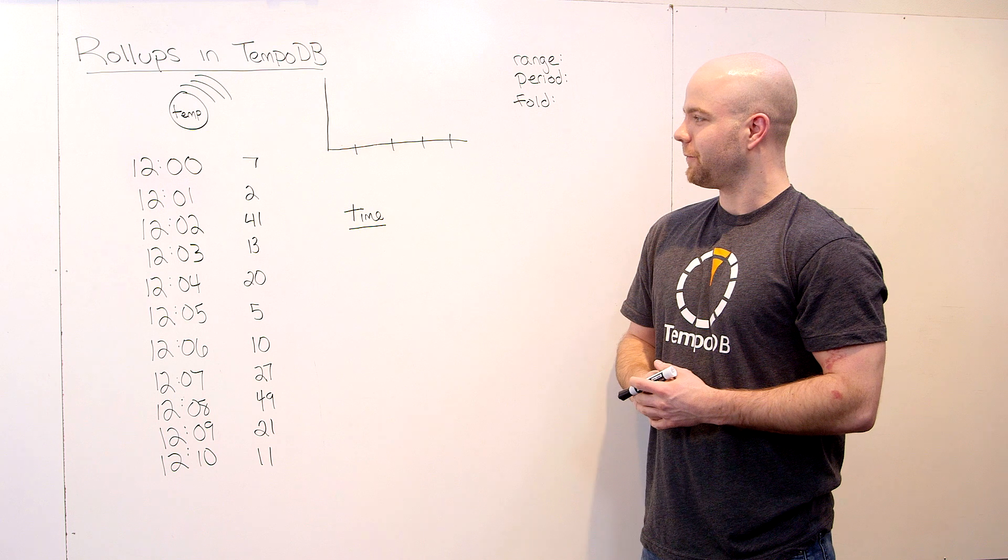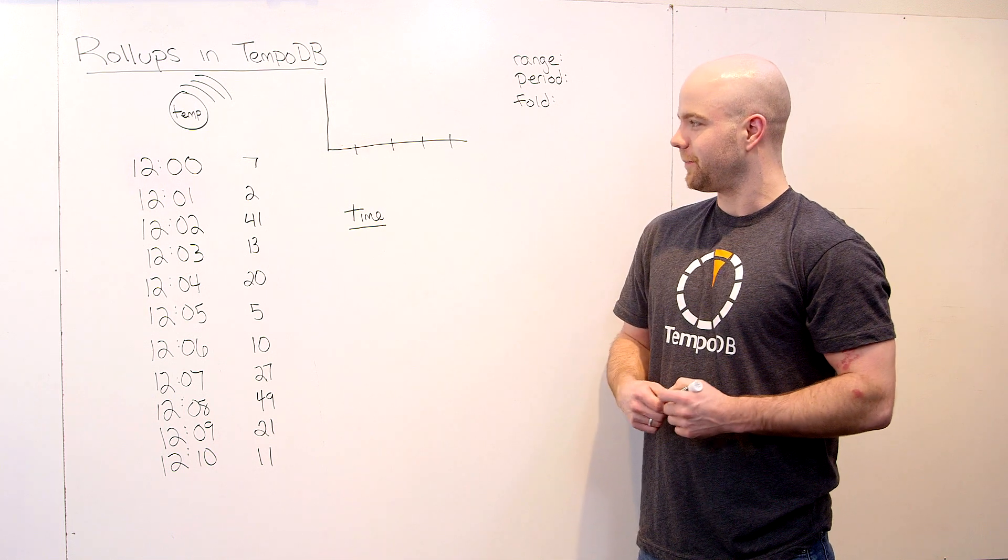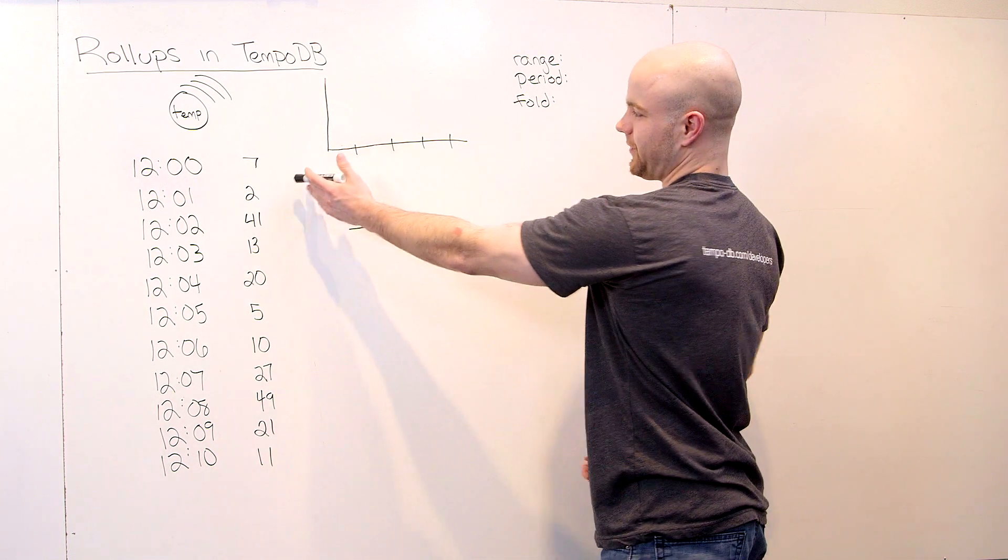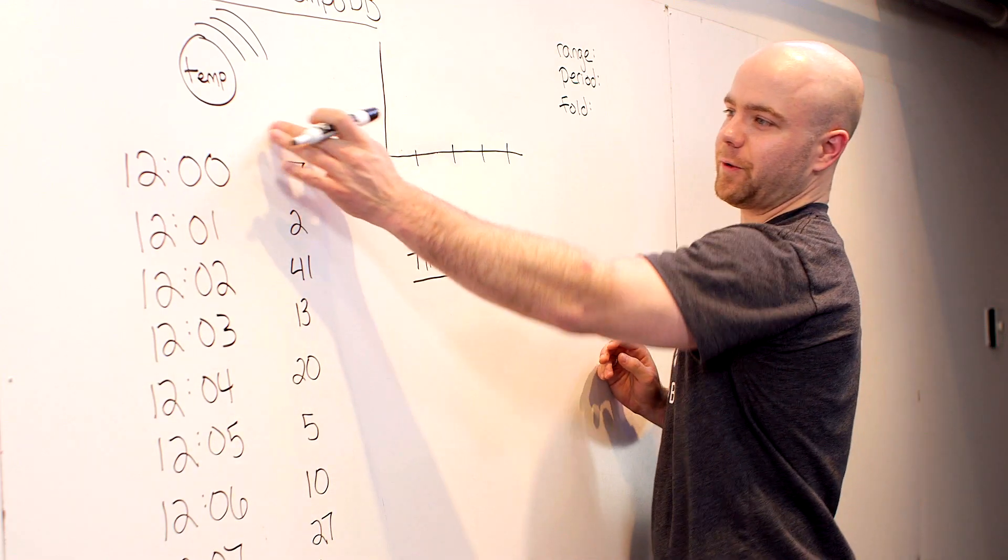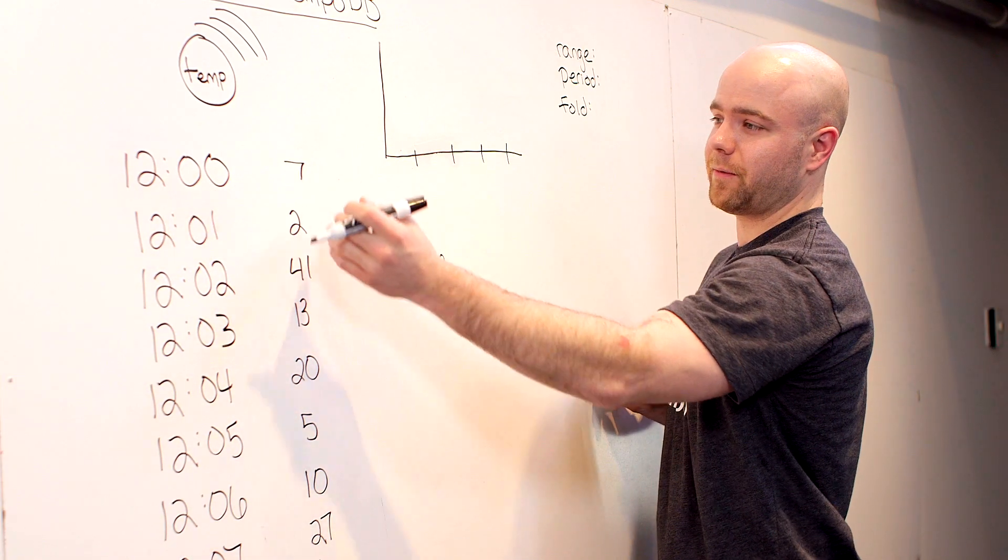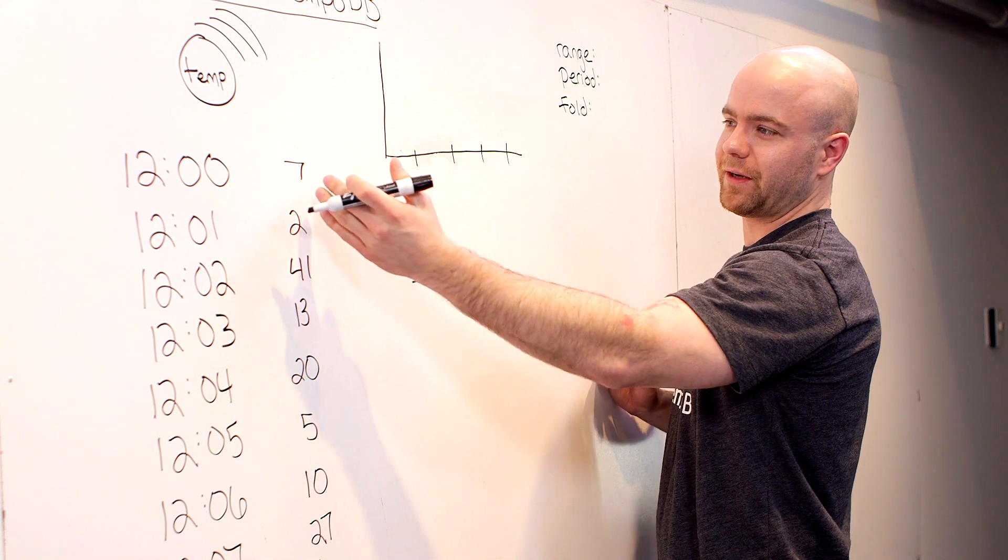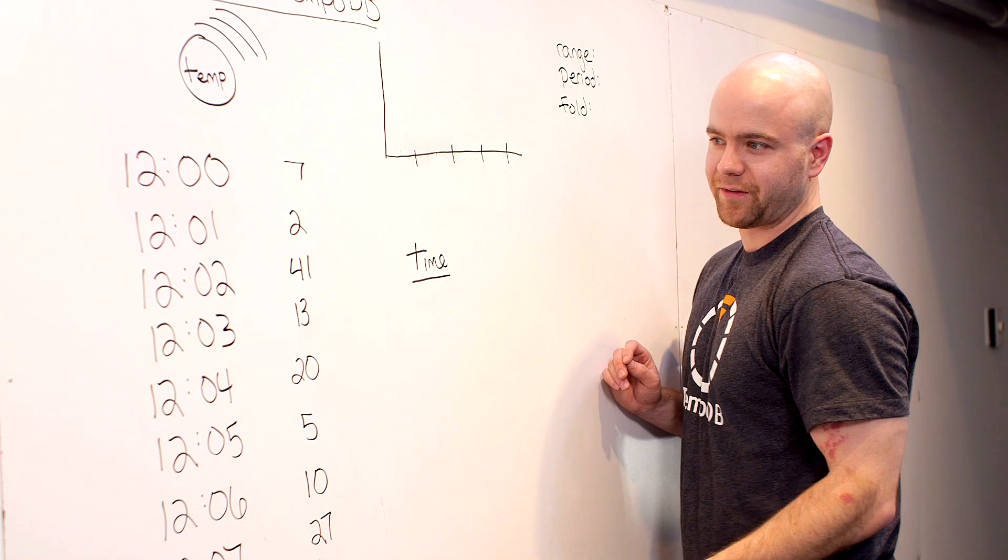But before we jump into it, one thing that we want to get through is some of the fundamental concepts in TempoDB, namely a TempoDB series. And in TempoDB, a series is just a stream of key-value pairs where the key is a timestamp and the value is some numerical value representing, say, temperature at that time.